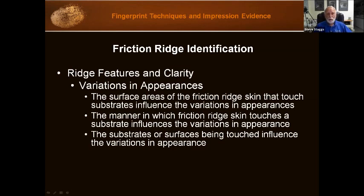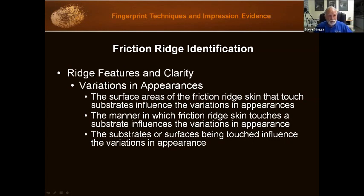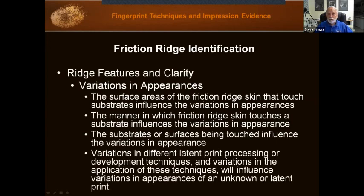Variations in temperature, humidity, or weather before, during, and after the independent touching of substrates will influence the residues on the substrate and the transfers of residues between skin and substrate. As skin is traumatized with imperfections and regenerates, variations in the skin can occur over time through the healing process and aging. We need to understand these things as we are working, and sometimes we even have to testify about them — explaining to a jury why the quality of a print turned out a certain way.